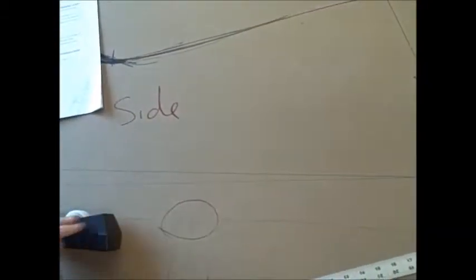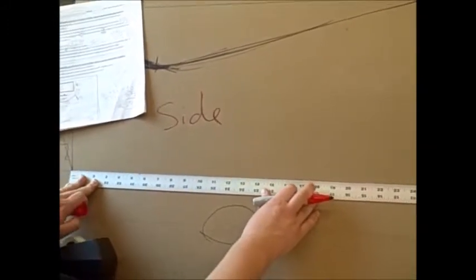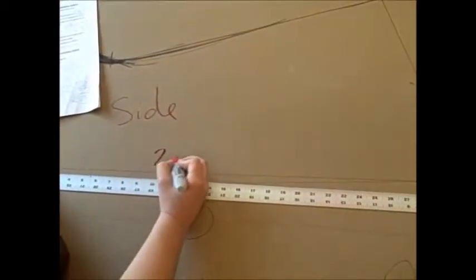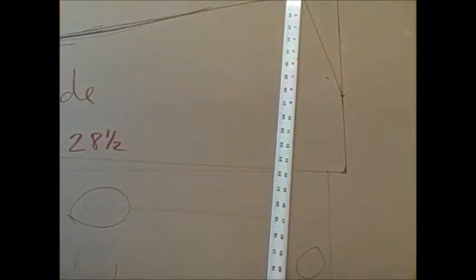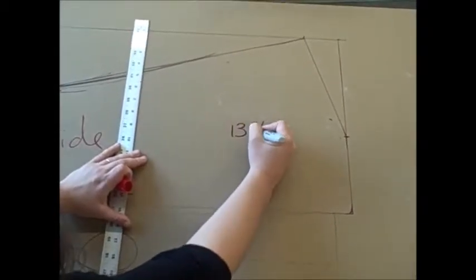And then it's very helpful if you take a moment and double check. This is 28 and a half going this way, and the height going this direction is 13 and 3 fourths.